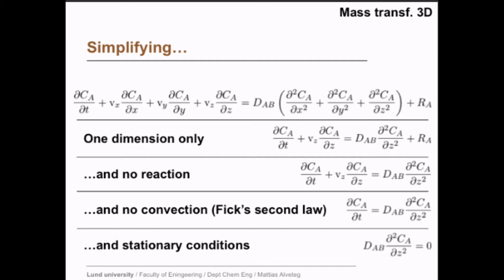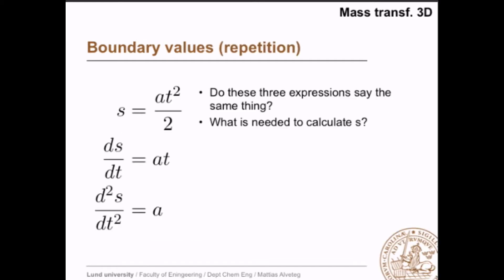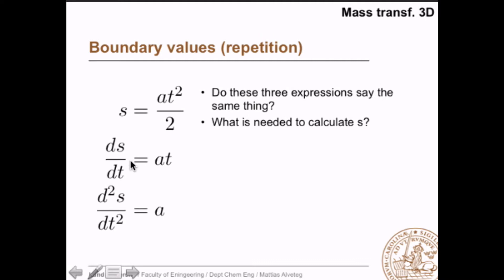Now, before we go any further, let's just mention briefly the difference between these three equations here. You probably recognize these equations: s equals at² divided by 2, ds/dt equals at, and d²s/dt² equals a. Do these three expressions say the same thing, and what is needed to calculate s? Well, they don't say the same thing, because in this equation you simply need to put in the time, and you need to know the acceleration, and then you can calculate the distance s.